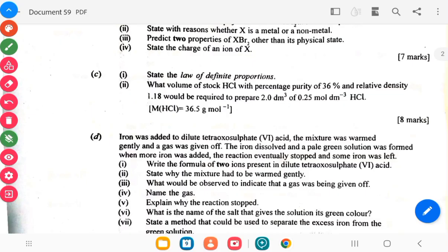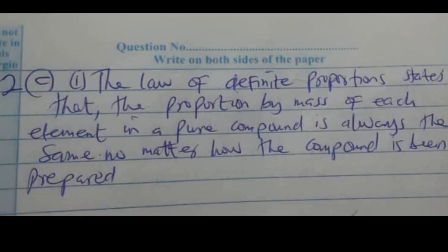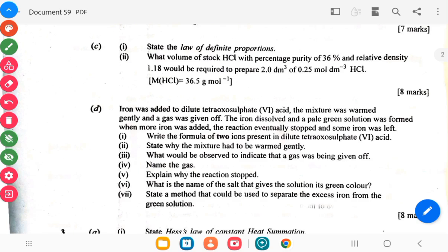Then the C says state the law of definite proportions. So the CI, what volume of stock HCl at percentage purity 36 percent and relative density 1.18 will be required to prepare 2 dm3 of 0.25 mol/dm3 HCl.